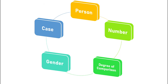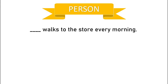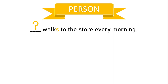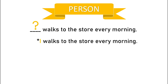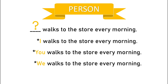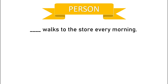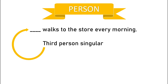Inflection can include information regarding person, number, degree of comparison, gender, or case. For example, in the sentence 'blank walks to the store every morning,' the '-s' in 'walks' encodes information about grammatical person, because there are constraints on what can fill the blank. The sentences 'I walks,' 'you walks,' or 'we walks to the store every morning' would all be ungrammatical — the grammatical person would not be consistent between the verb and the pronoun. When we see the '-s' in 'walks,' we know we need a third person singular pronoun in the blank position.